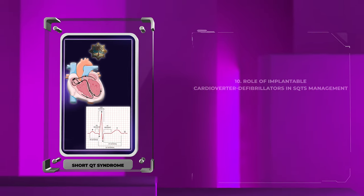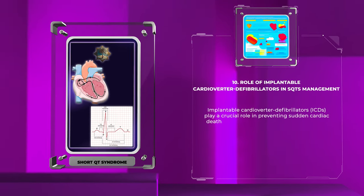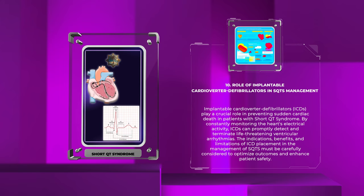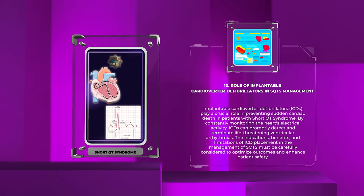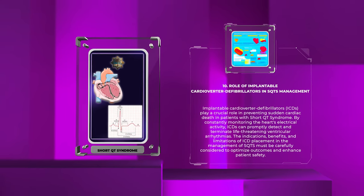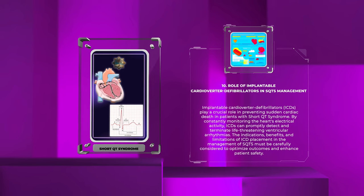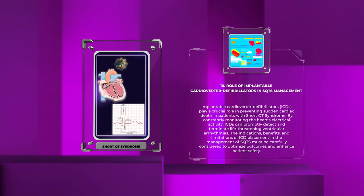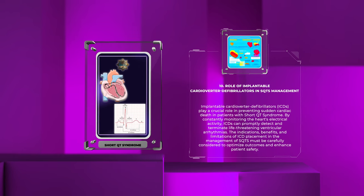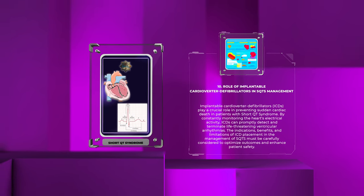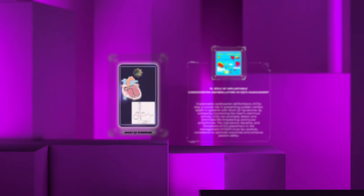Implantable cardioverter defibrillators, ICDs, play a crucial role in preventing sudden cardiac death in patients with Short QT Syndrome. By constantly monitoring the heart's electrical activity, ICDs can promptly detect and terminate life-threatening ventricular arrhythmias. The indications, benefits, and limitations of ICD placement in the management of SQTS must be carefully considered to optimize outcomes and enhance patient safety.